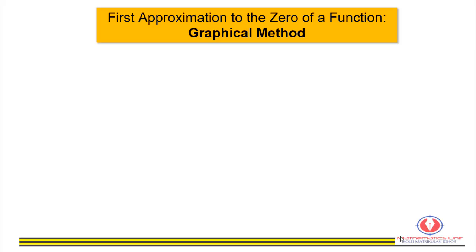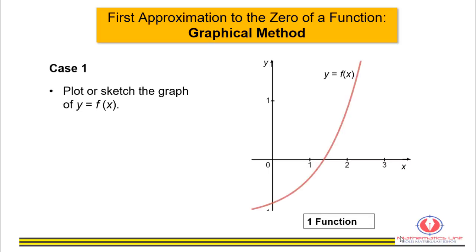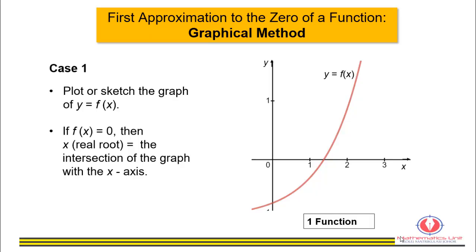In the graphical method, there are two cases. The first case is when the equation involves only one type of function. Plot or sketch the graph of y equals f of x. If f of x equals zero, then x — the real root — is the intersection of the graph with the x-axis. From the graph, we can say that the approximate value of the root is x-naught equals 1.3.